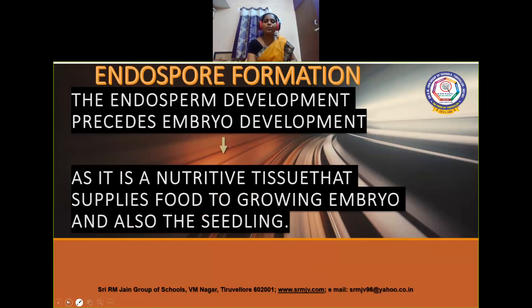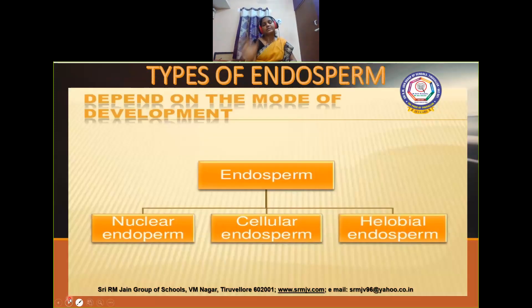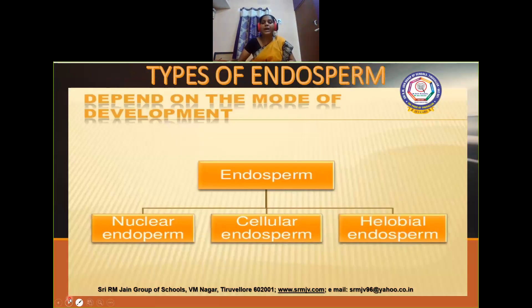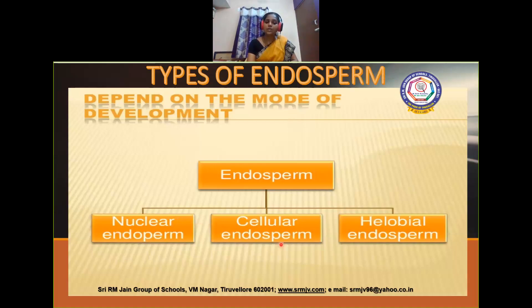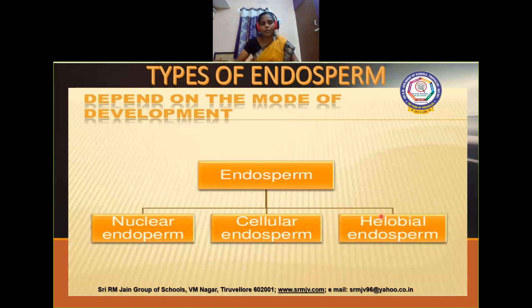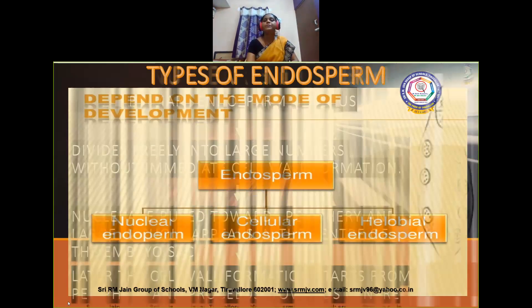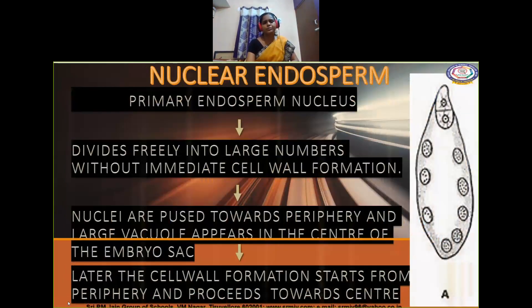Now we are going to see the different types of endosperm. We have three different types: nuclear endosperm, cellular endosperm, and helobial endosperm.